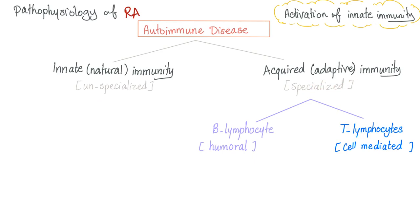Innate immunity is non-specialized — like street fighters beating everyone without discrimination. No army, navy, or air force. It responds to both microbial and non-microbial antigens. For example, cilia in your trachea just sweep everything out. Your white blood cells try to kill bacteria by initiating an inflammatory response — bacterial toxins bind to TLRs (toll-like receptors), which activate caspases.